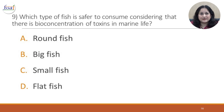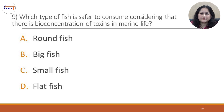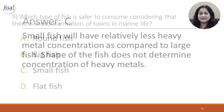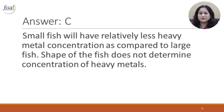Question 9: Which type of fish is safer to consume considering that there is bioconcentration of toxins in marine life? A. Round fish. B. Big fish. C. Small fish. D. Flat fish. The answer is C. Small fish will have relatively less heavy metal concentration compared to large fish. The shape of the fish does not determine the concentration of heavy metals.